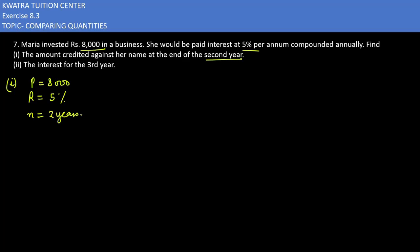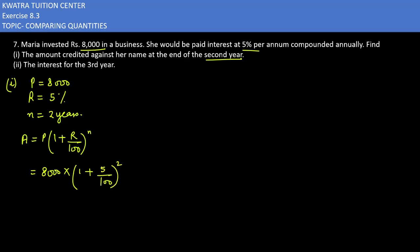Compounded annually, to find the amount use the formula: Amount = Principle × (1 + r/100) raised to the power n. Principle is eight thousand, rate r is five, divided by hundred, raised to power n which is two. So you are getting eight thousand into (105/100) squared. After taking LCM you will get 105 over 100, and take the square of it.